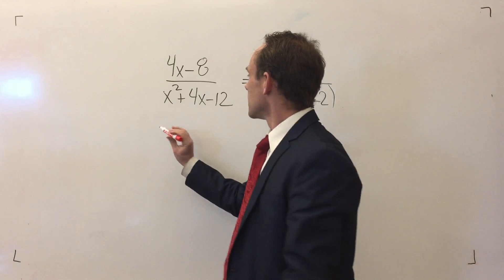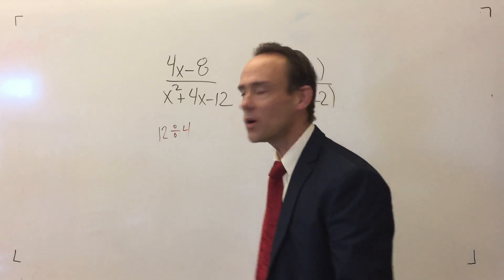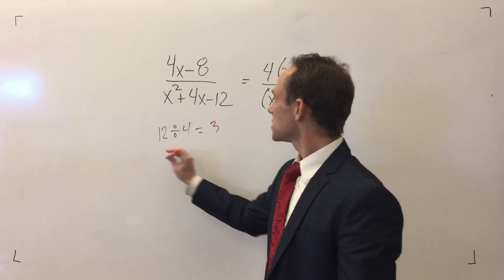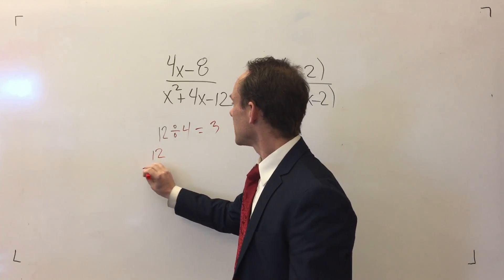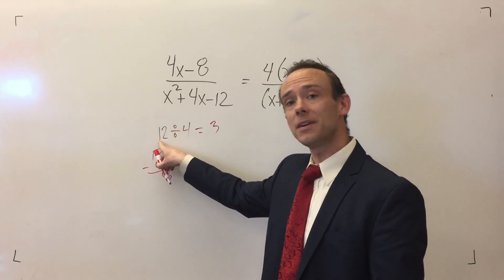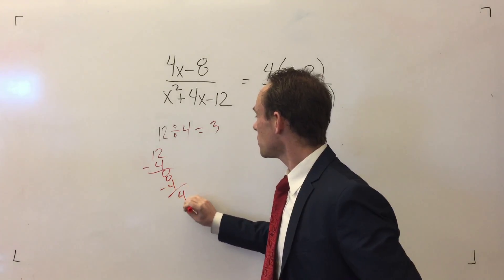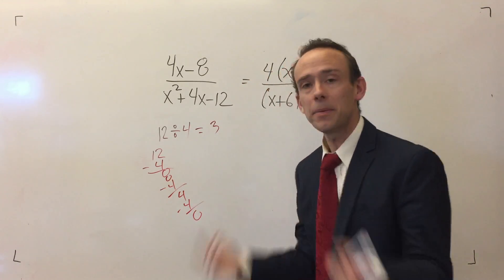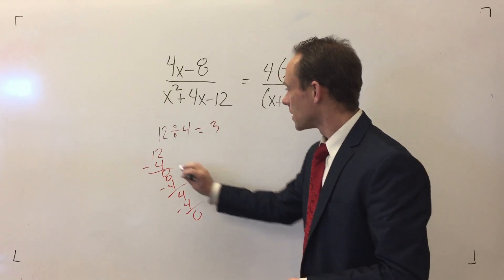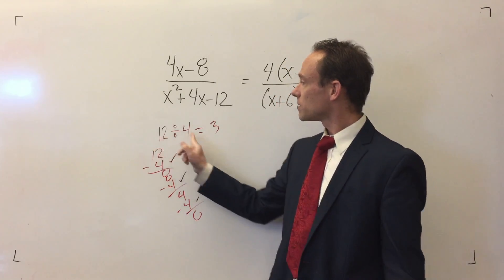It's one of my favorite things to show. Let's take the number 12 and divide it by the number 4. We know that that's 3. One of the reasons we know it's 3 is because you can think of division as the number of times that you subtract that number from that number to get to zero. So: 12 minus 4 is 8, minus 4 is 4, minus 4 is 0. How many times did I need to subtract 4 from 12 to get to zero? Three times. So 12 divided by 4 is 3.